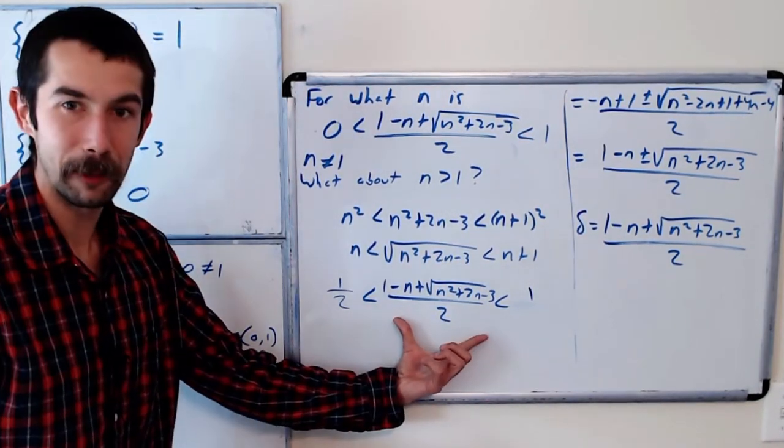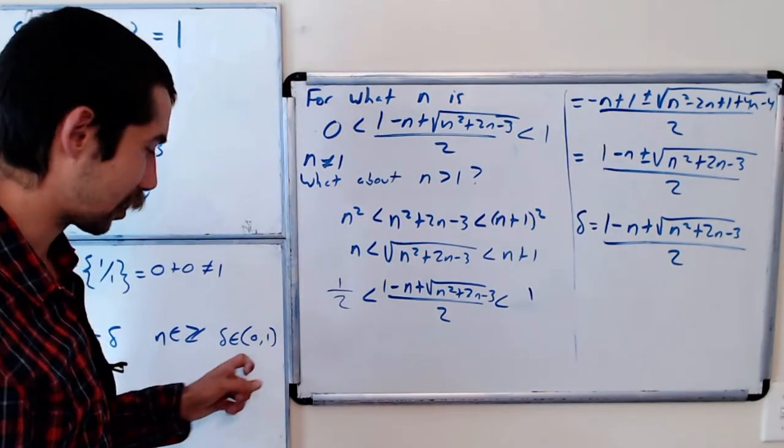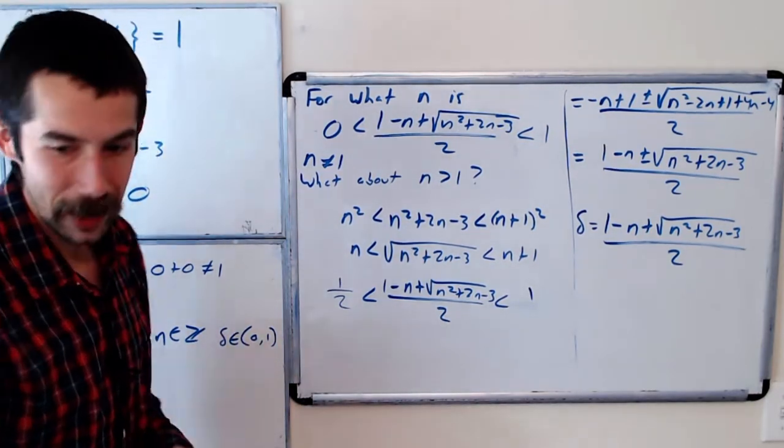Okay so this for n greater than 1 is between 0 and 1. Which is what we're hoping right? Delta has to be between 0 and 1. So we could conclude